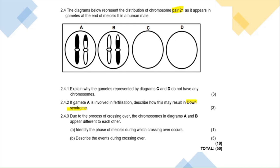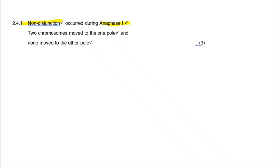You have to specify which phase because meiosis happens in two phases — meiosis 1 and meiosis 2. Non-disjunction occurs during anaphase 1, as confirmed by the chat. If you just write 'anaphase' without specifying anaphase 1, you lose the second mark. Always slow down in your exam and write 'anaphase 1.' The last mark requires you to state that both chromosomes move to one pole, meaning none move to the other pole.